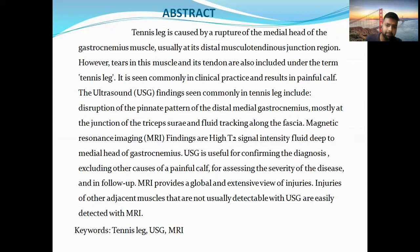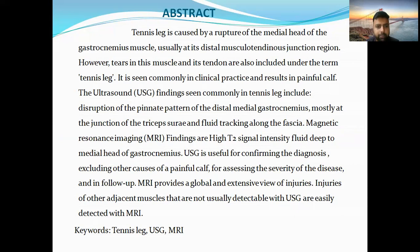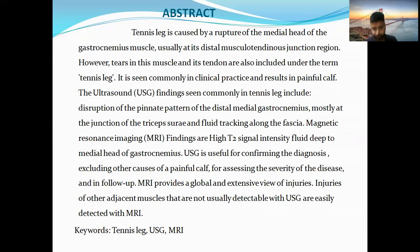The ultrasound findings most commonly include disruption of the pennate pattern of the distal musculotendinous junction of gastrocnemius, mostly at the triceps, and fluid tracking along the fascia. MRI findings typically include high T2 signal intensity deep to the middle head of gastrocnemius.